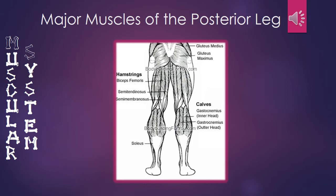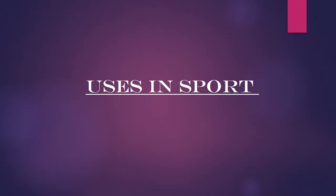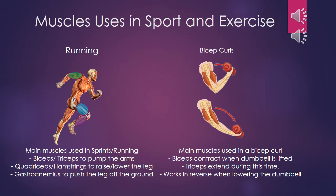For the muscles used in a sprint, the main muscles used are the biceps and triceps allowing us to pump the arms, the quadriceps and hamstrings to raise and lower the leg, and the gastrocnemius to push the leg off the ground.